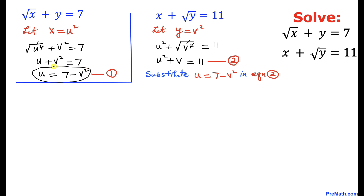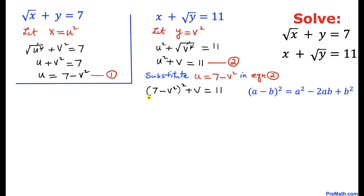Now let's substitute u equals 7 minus v squared from equation one into equation two. So u squared becomes 7 minus v squared, all squared, plus v equals 11. We will expand this binomial using the formula a minus b squared.